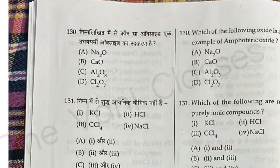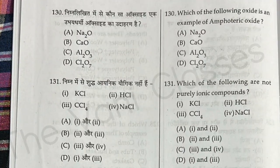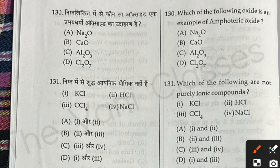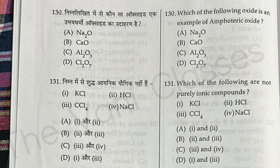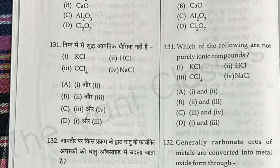Question 130: Which of the following oxides is an example of an amphoteric oxide? The answer is aluminium oxide, Al2O3.